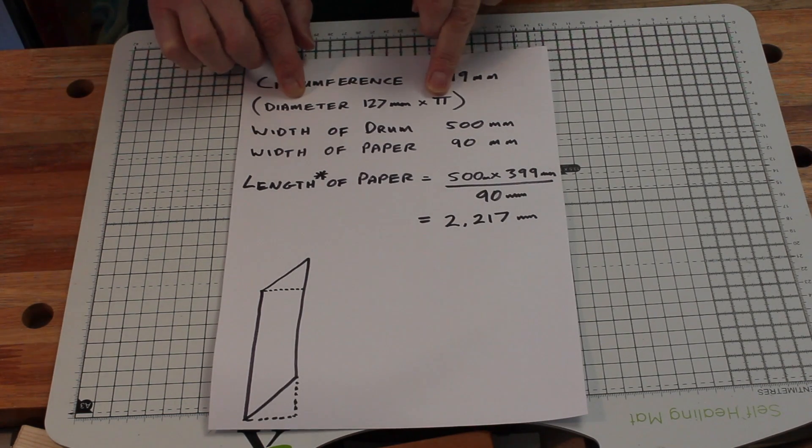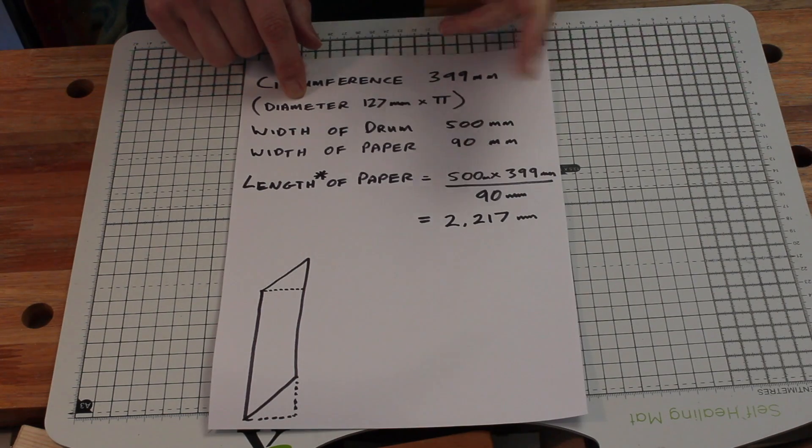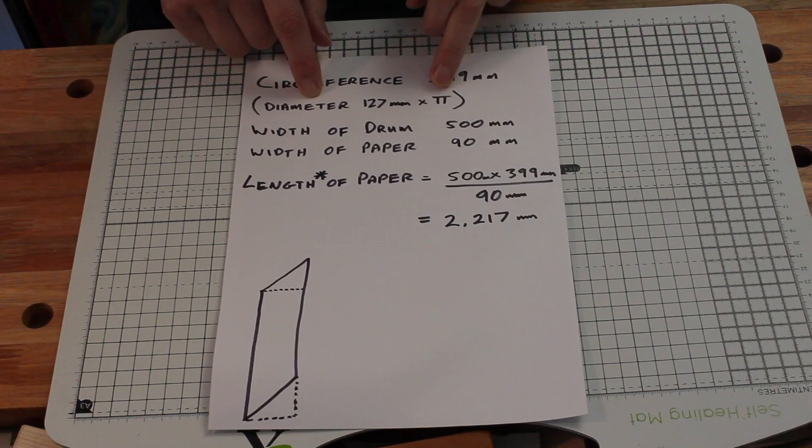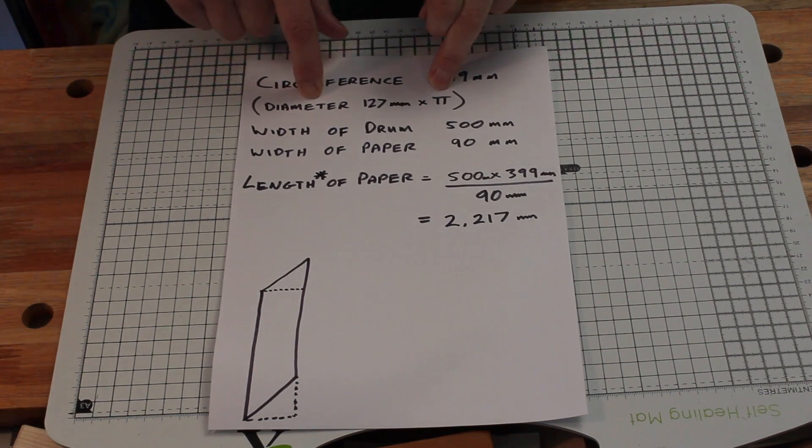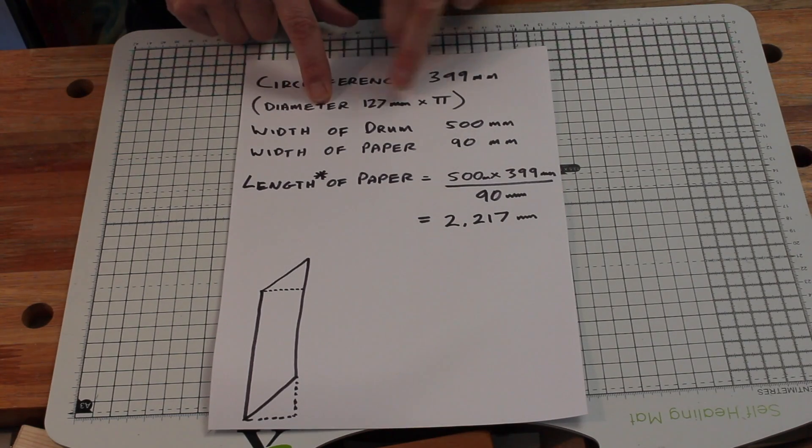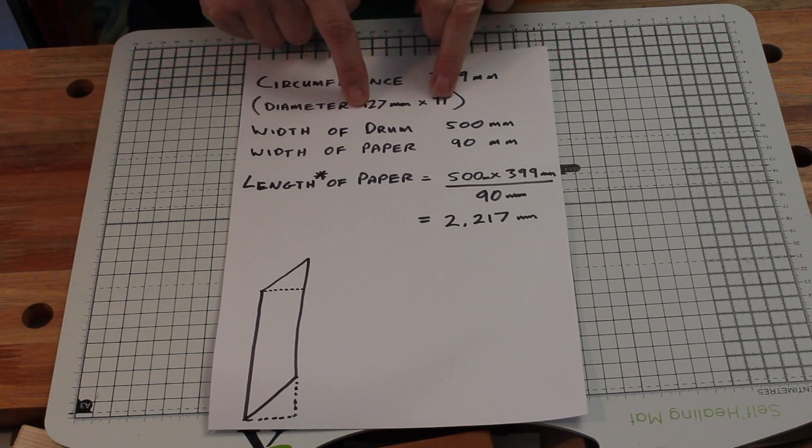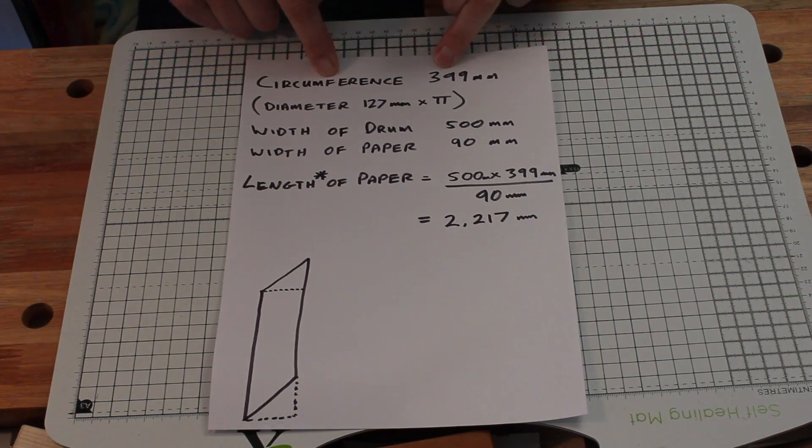Which is 3.14159265358979323846264338327950288. It's a party trick of mine, I wasn't reading that. Yeah, show off. Right, yeah. 127 by pi gives you 399 millimeters.